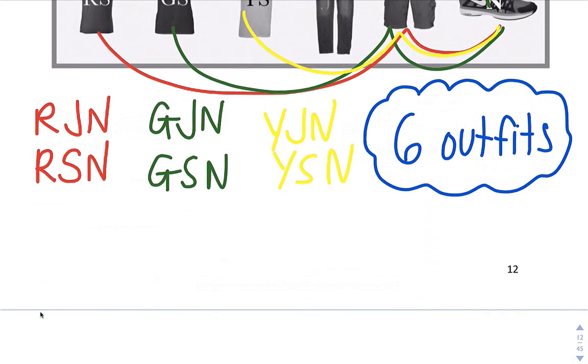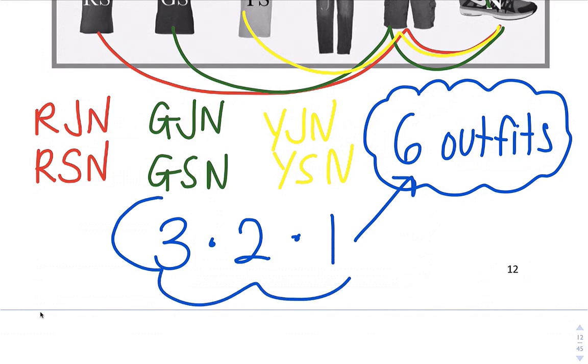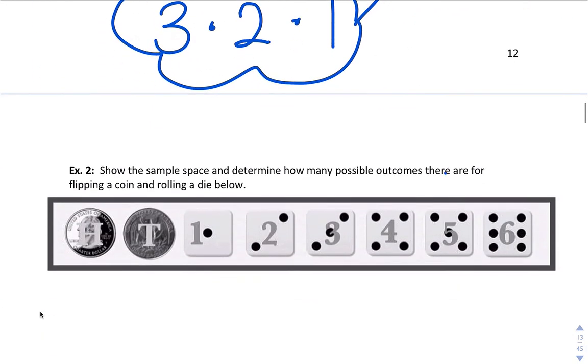So there are six different outfits that you could get with three shirts, two pairs of bottoms, and shoes. Another way that we could have done this - there are several ways to do this - you could have also looked at multiplying. Three shirts, two bottoms, one pair of shoes, and you could get the same results.